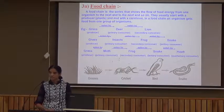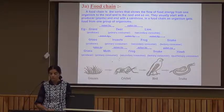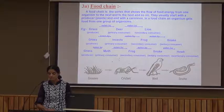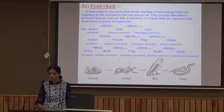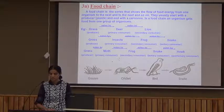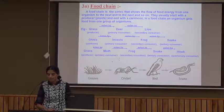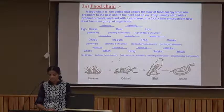Food chain is the series that shows the flow of food energy from one organism to the next and so on. Food chains usually start with producers, that is plants, and end with a carnivore. For example, grass is eaten by deer — grass is the producer and deer is the primary consumer. Then deer is eaten by lion, so lion is the secondary consumer.